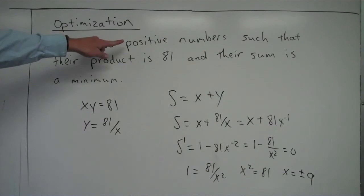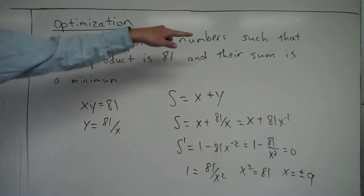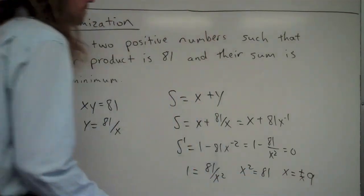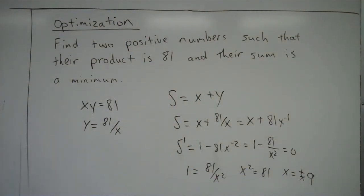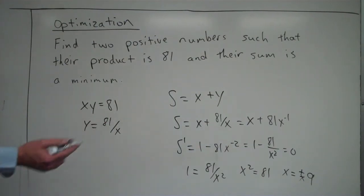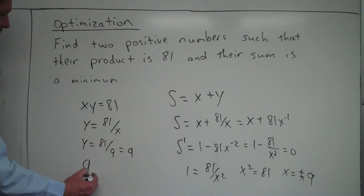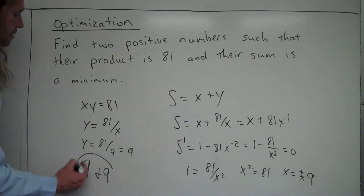But if I look back up to the original problem up here, it says find two positive numbers. So I'm not going to use the negative. It's only going to be the positive. So I have found that x is equal to 9. Now I wanted to find two positive numbers, one being x, one being y. So I'm going to go back over to here, and I'm going to plug 9 in for x to see what y is equal to. Because I know that x is equal to 9. So I get y equals 81 over 9, which is equal to 9. So my two positive numbers, my answer would be 9 and 9.